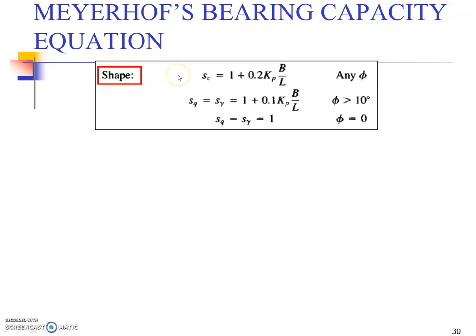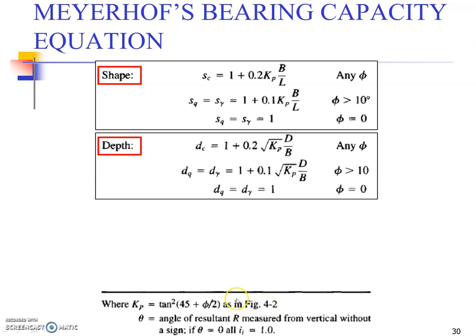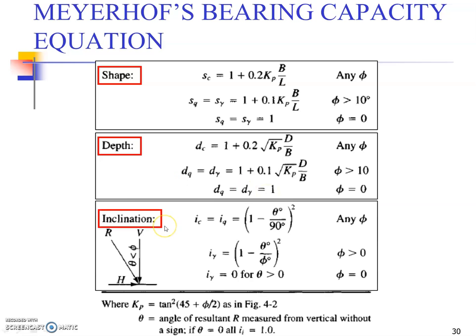To compute these shape factors, we have formulas for various values of phi, where Kp factor is given by tan squared (45 + phi/2). Similarly, depth factor Kp may be computed from this. We will study this coefficient Kp in our next topic of lateral earth pressure. For phi greater than 10 degrees, you can use the simplified expression. Phi equals zero degrees makes Dq and D-gamma equal to one. The inclination factor means if you have your foundation placed at an inclination, not perfectly vertical or normal to the ground surface, you may have to compute these factors: Ic, Iq, and I-gamma.